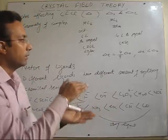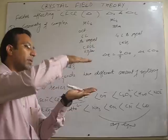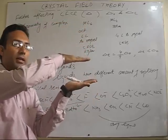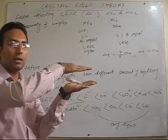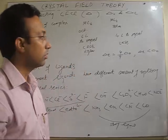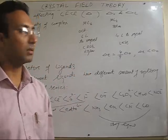So, stronger the ligand, stronger is repulsion and more is splitting. Weaker the ligand, weak field ligand, there will be splitting value will be less. For the same metal in the same oxidation state. So, this decides most of the properties of the complexes.